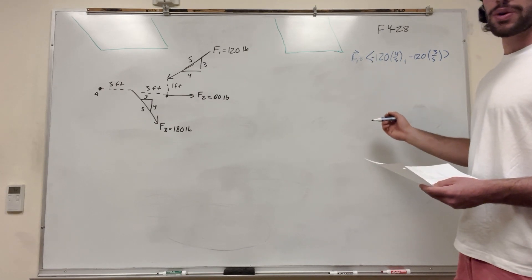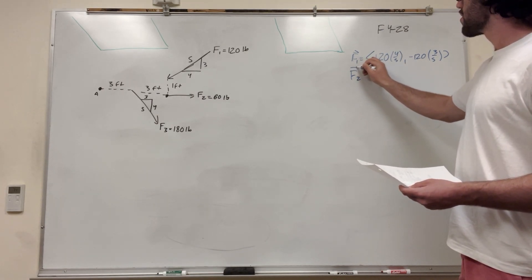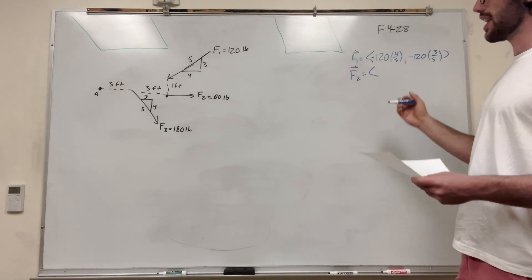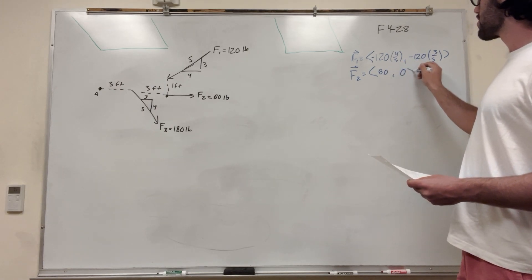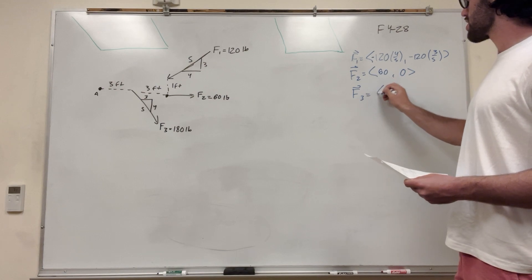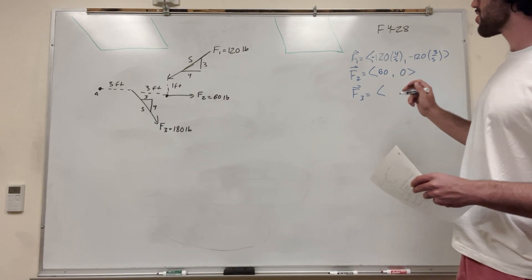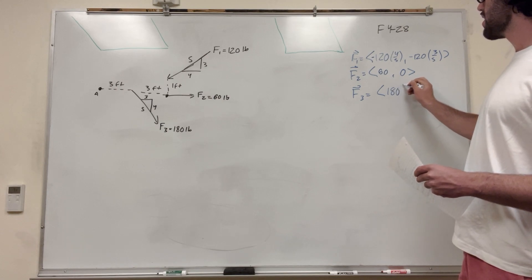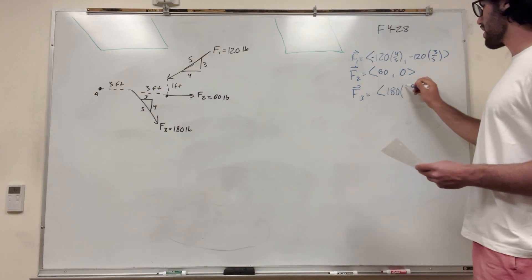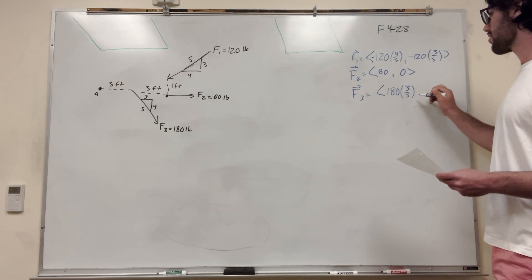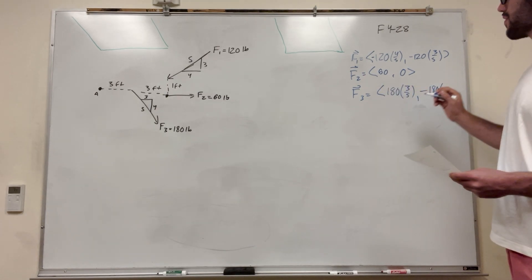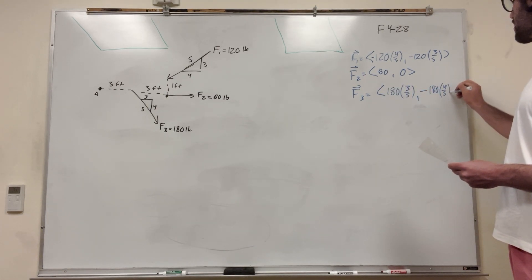Let's do that for Force 2 as well. Force 2 is just acting in the x direction — it just goes 60 in the x and 0 in the y. Force 3: this is going positive in the x direction, so it's going to be positive 180, and its ratio is 3/5 in x for every 5 hypotenuse. Then it's going negative in the y, so negative 180, and its ratio is 4/5.